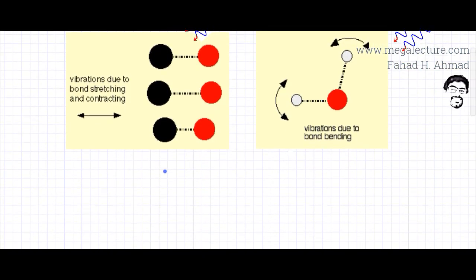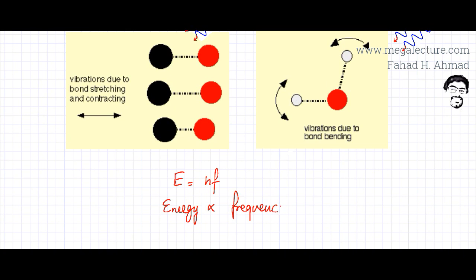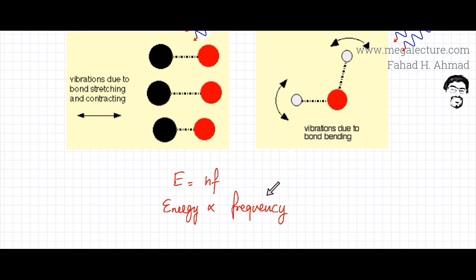According to E = hf, energy is proportional to frequency. What that basically means is that not all bonds are going to be vibrating in exactly the same way. Different bonds vibrate in different ways, so every bond would require a different amount of energy, and therefore they're going to absorb different frequencies.